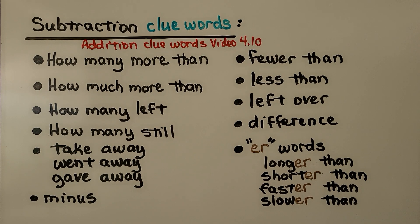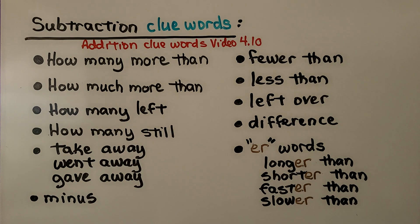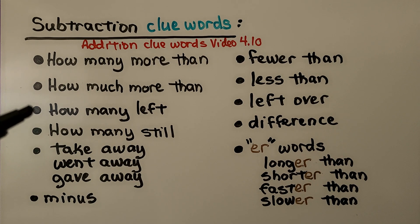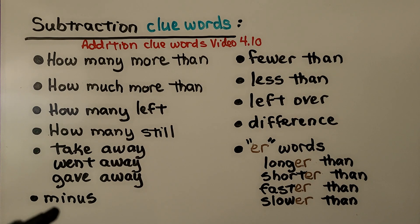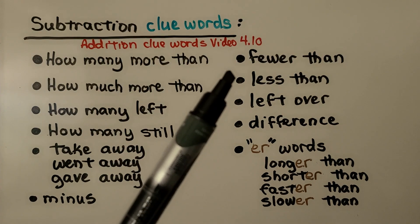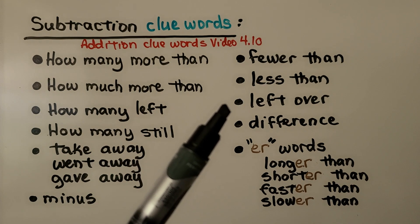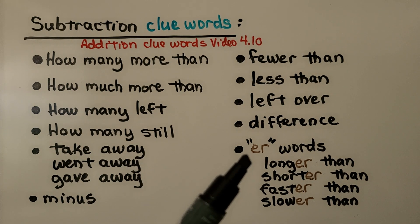Here are some subtraction clue words — words in a word problem that tell us the operation we need is subtraction. We originally learned about addition clue words in video 4.10, linked in the description. Some subtraction clue words are: how many more than, how much more than, how many left, how many still, take away, went away, gave away, minus, fewer than, less than, left over, difference.